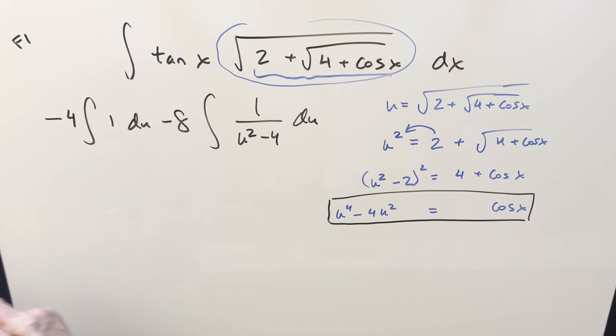And so let me get a little space and we'll try to finish this off. So now on the first integral, of course, that's just going to be u when we integrate. So we get minus 4u right here. Here, I actually like the formula for inverse hyperbolic tanch, but I'm not going to use it. I'm going to try to match MIT's solution. So they're going to do it in terms of natural log.